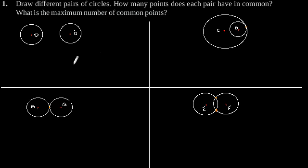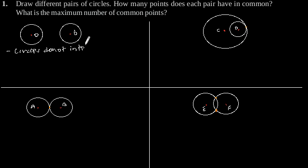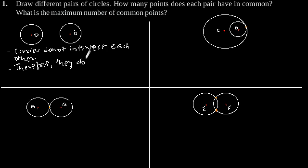These are the different pairs of circles. Let's start with the first pair of circles with center O and O'. Here we can observe that the circles do not intersect each other. Therefore, they do not have any point in common.